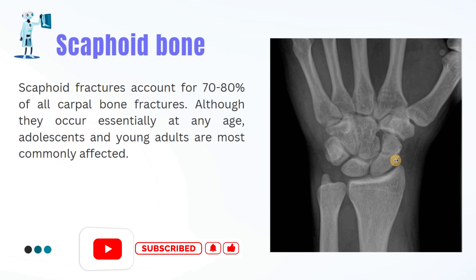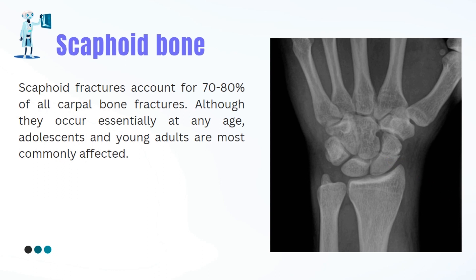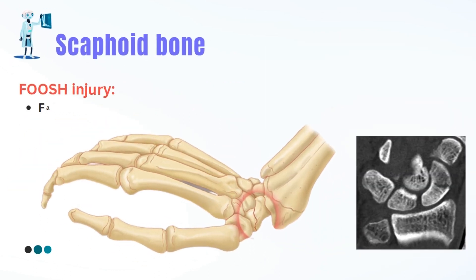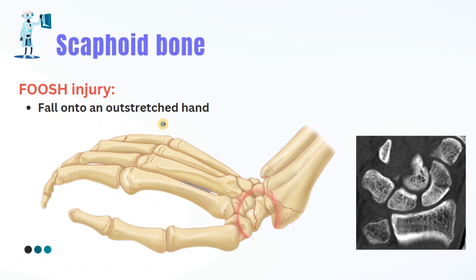The reason behind this is that the scaphoid bone only starts to develop after the age of eight or nine. One common way that the scaphoid can get injured is through a fall onto an outstretched hand, also known as FOOSH — a pretty common mechanism for traumatic disruptions in the wrist bones and ligaments.